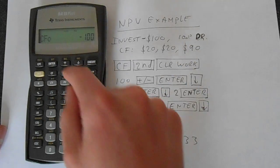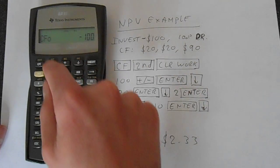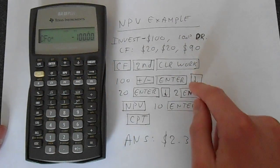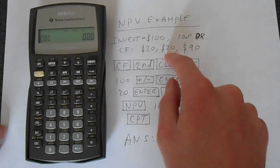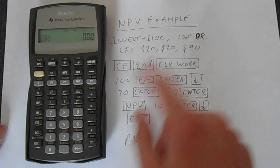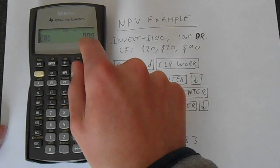Then we just enter this. We've got cash flow zero in here—enter—that's now in memory. Then we go down to the next cash flow. We've got $20 twice, so we have to put the frequency to 2. Enter $20,